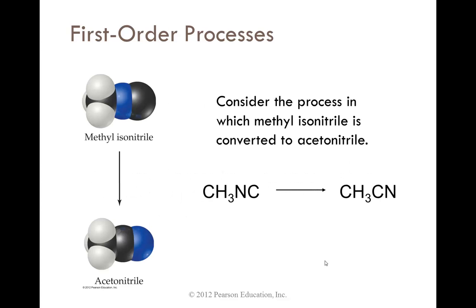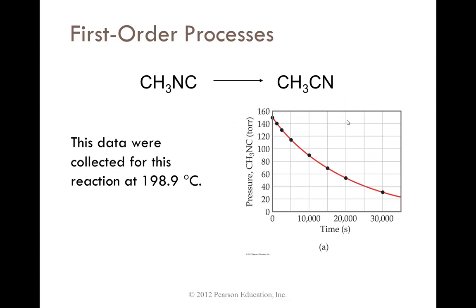Consider the process in which methyl isonitrile is converted to acetonitrile. This data was collected for this reaction at 198.9 degrees Celsius. Notice the concentration, the pressure, decreases as we go down and as time increases, the concentration decreases.